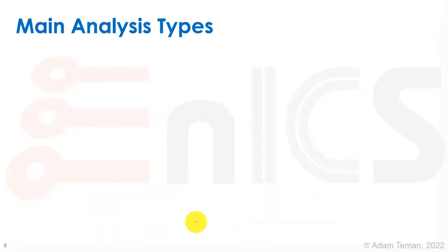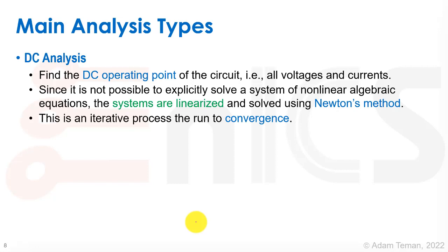That being said, we have the main analysis types of a circuit. So the primary analysis type is DC analysis. With DC analysis, we have to find the DC operating point of the circuit. What does that mean? It's all the voltages and currents that are in the circuit at steady state. Since it is not possible to explicitly solve a system of nonlinear algebraic equations, the systems are first linearized and then solved with Newton's method. And we'll be discussing that very, very in depth in the next part of this lecture. This is an iterative process and it leads to what we call convergence.